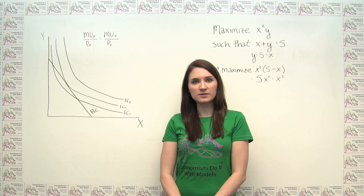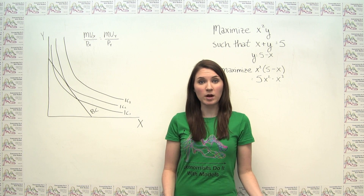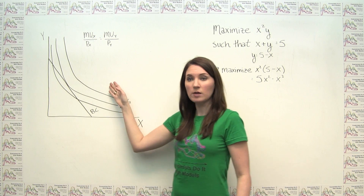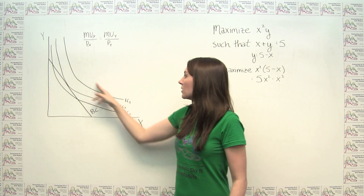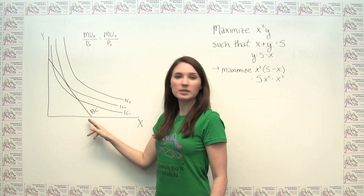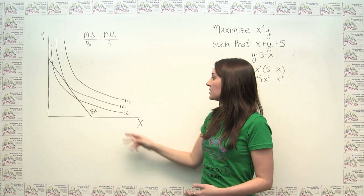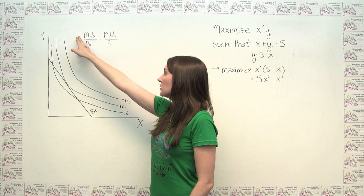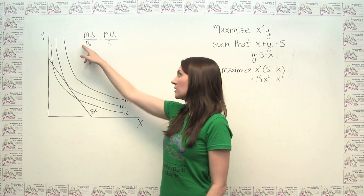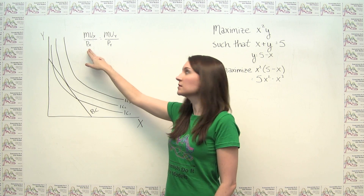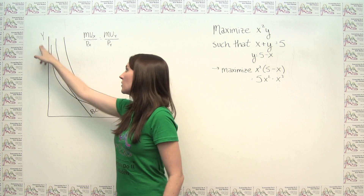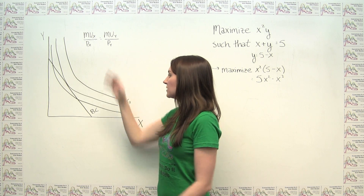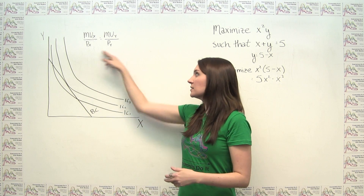In some other cases, economists have developed formulas for the optimal solution to specific classes of problems. For example, in a typical utility maximization problem with indifference curves and a linear budget constraint, economists have shown that the optimal solution is where the marginal utility of the good on the x-axis divided by its price equals the marginal utility of the good on the y-axis divided by its price.